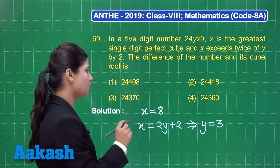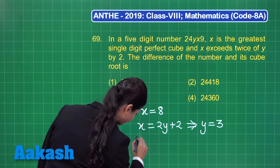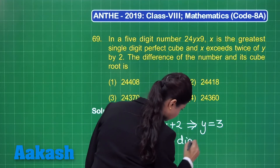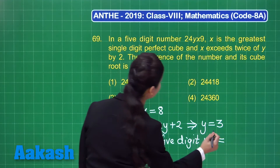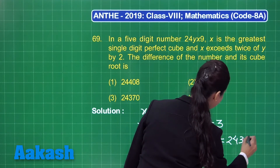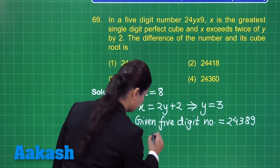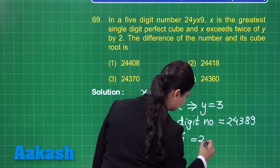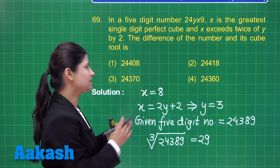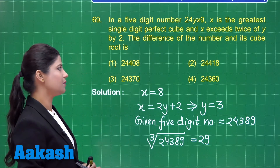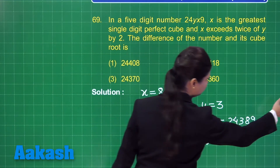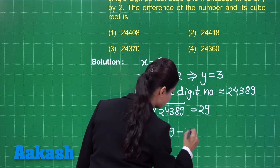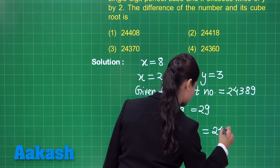With x as 8 and y as 3, the given 5-digit number is clearly 24389. The cube root of 24389 is 29, as it is the cube of 29. Next, we need to obtain the difference of the number and its cube root. The given number is 24,389, and subtracting its cube root of 29 gives us 24,360.